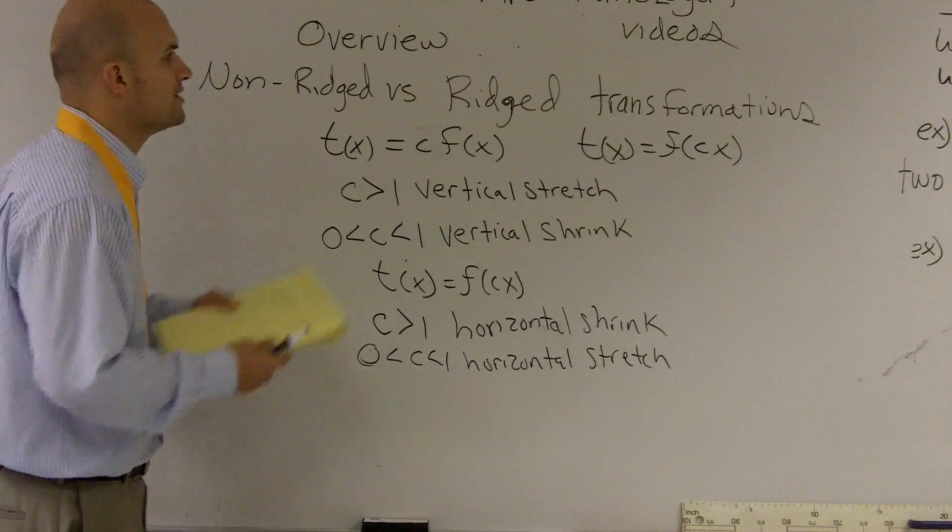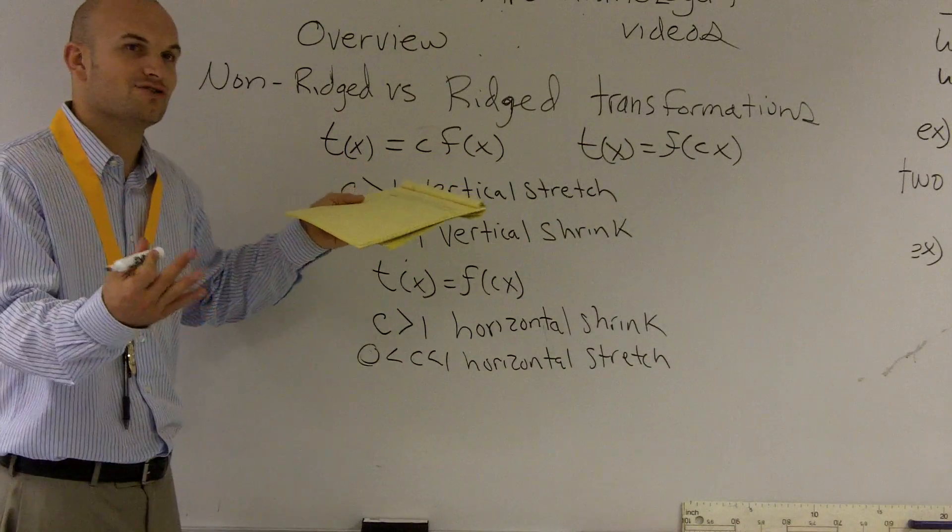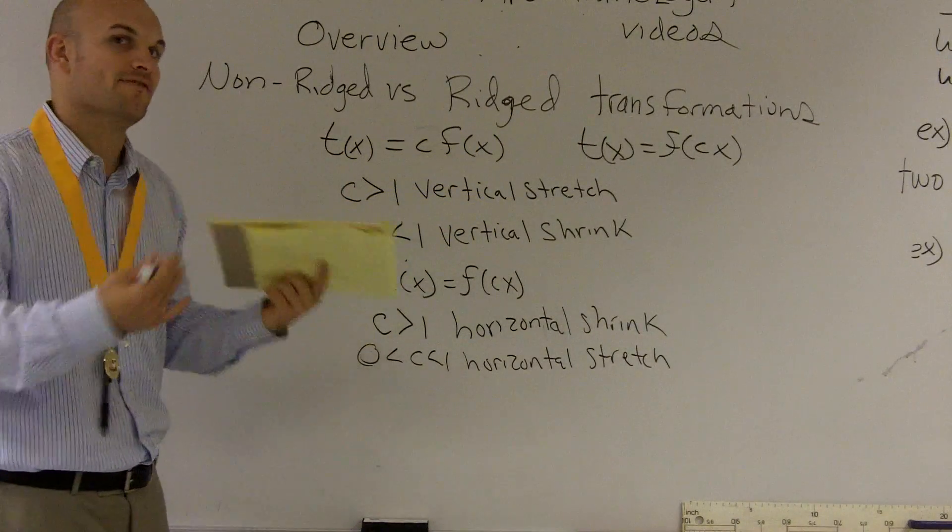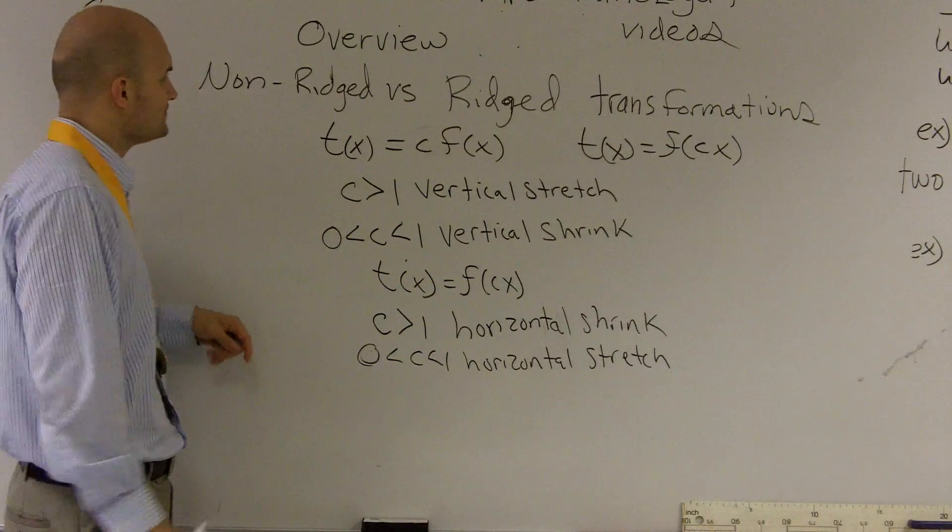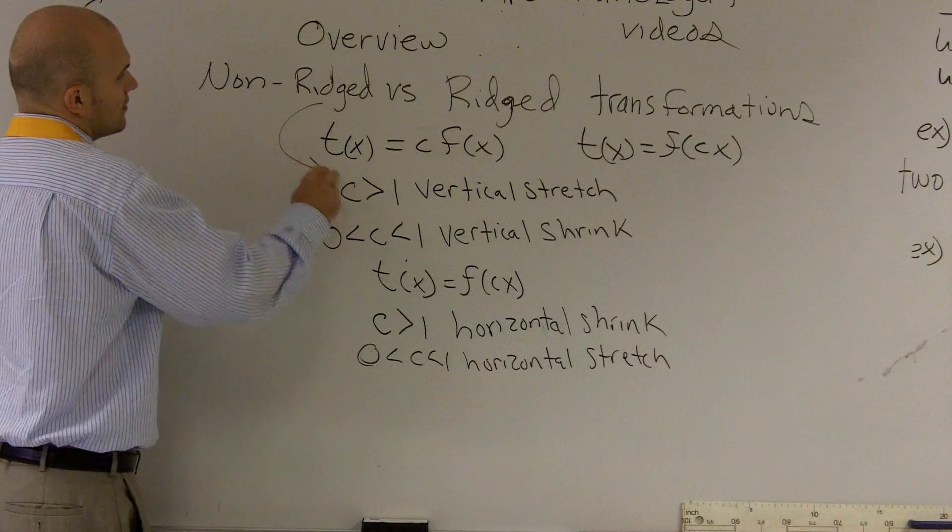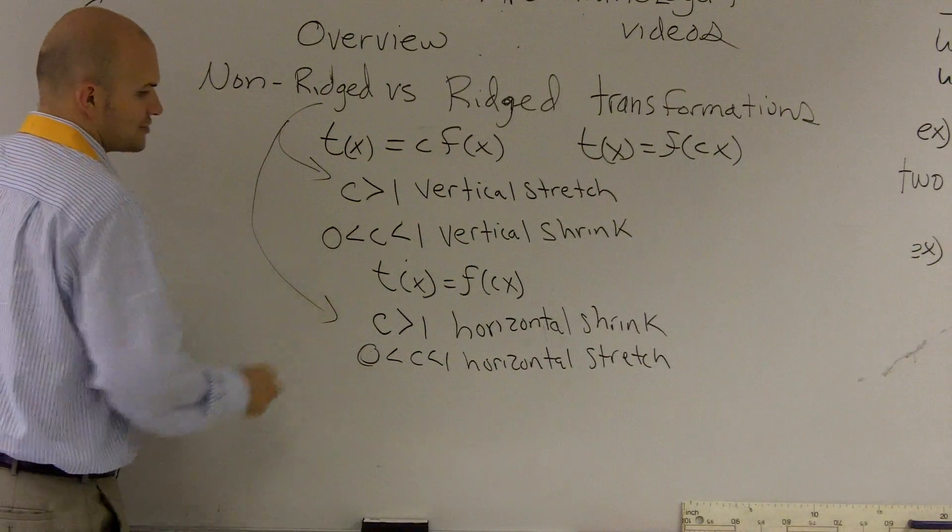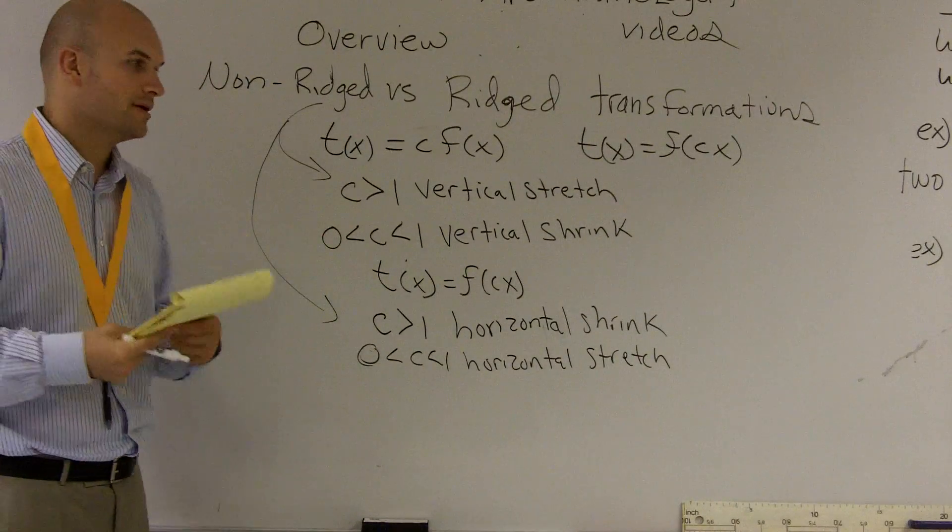Hopefully, just remember rigid are translations or reflections, so they're all transformations that happen that don't affect the shape or the size of the graph or whatever you're translating. And non-rigid would be stretching and shrinking, dilations, anything that's actually going to affect the shape of this.